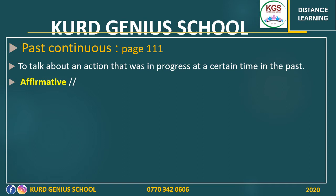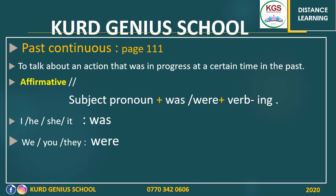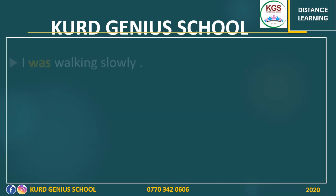The first form is affirmative. The rule: we have a subject pronoun — I, we, you, they, he, she, it — then we use 'was' or 'were' depending on the subject, and after that we put the verb with -ing. We use 'was' with I, he, she, it. We use 'were' with we, you, they.